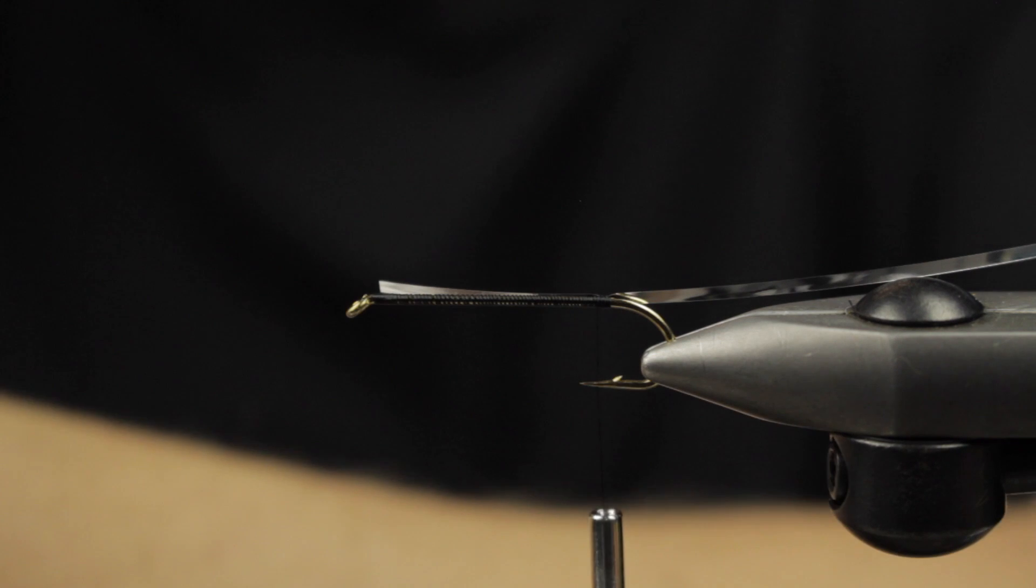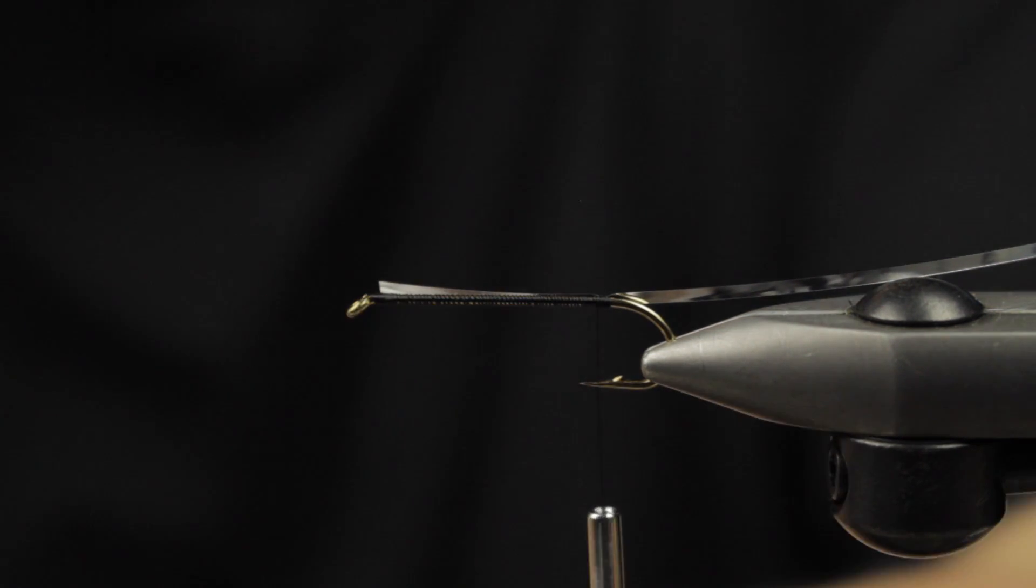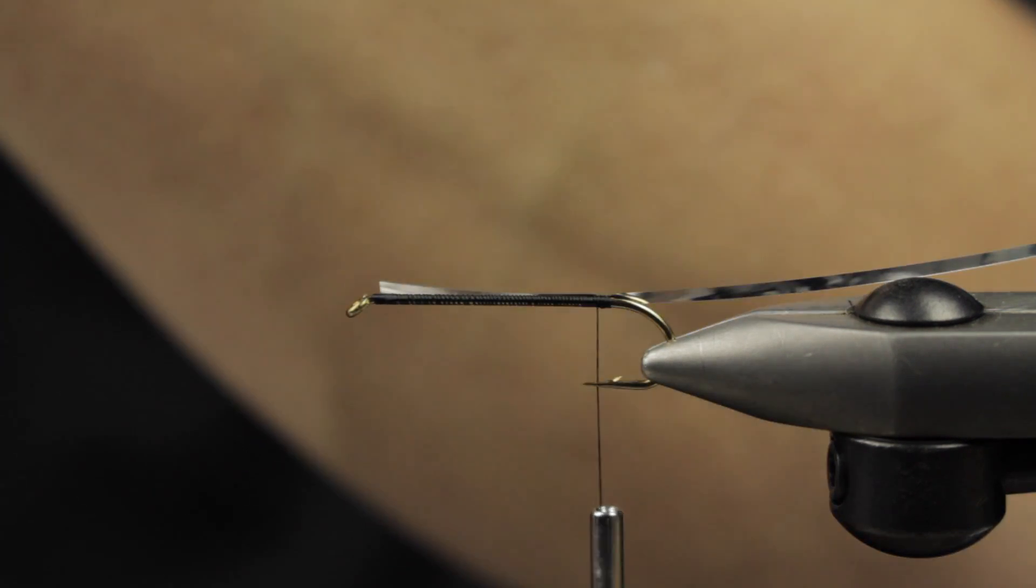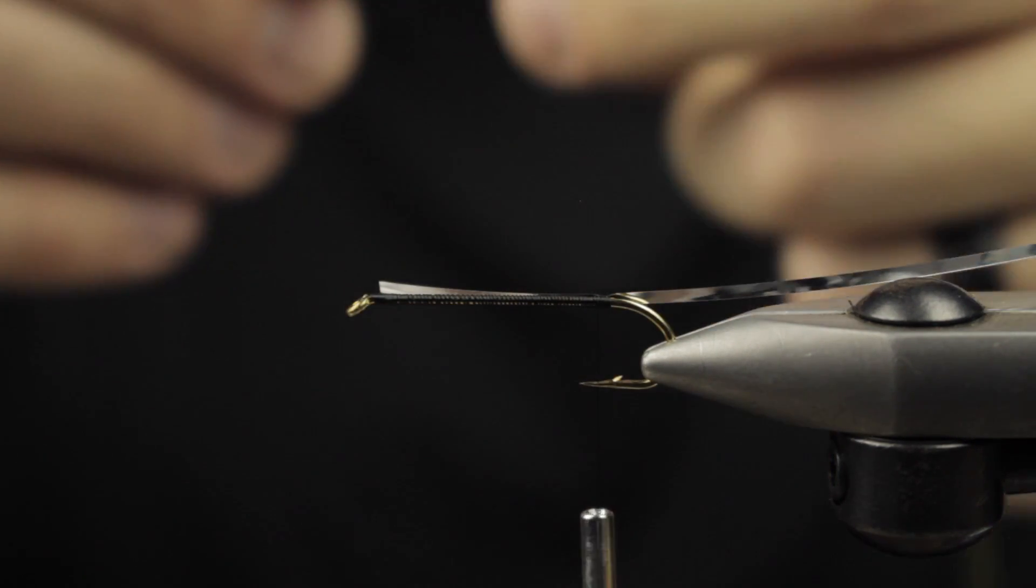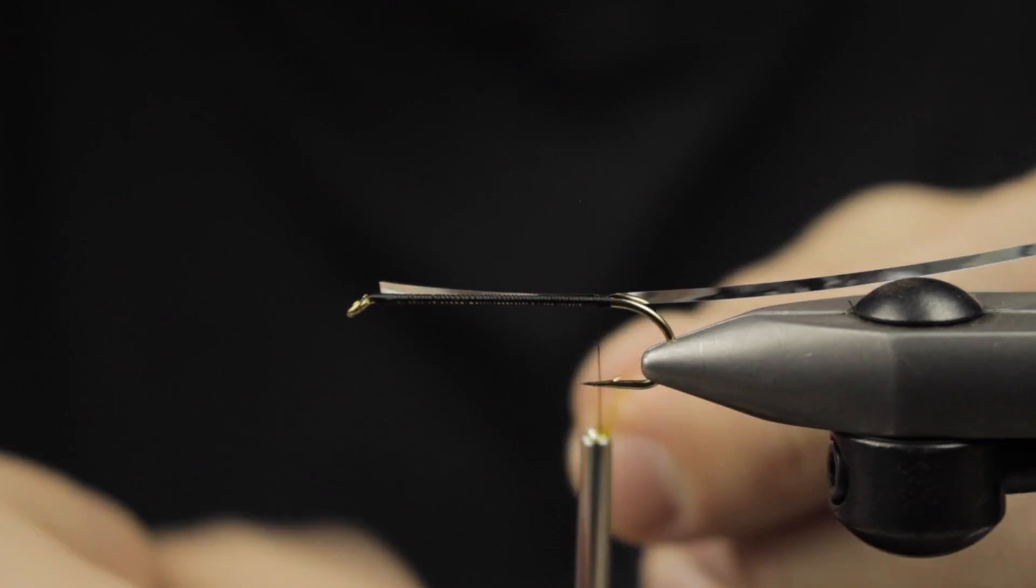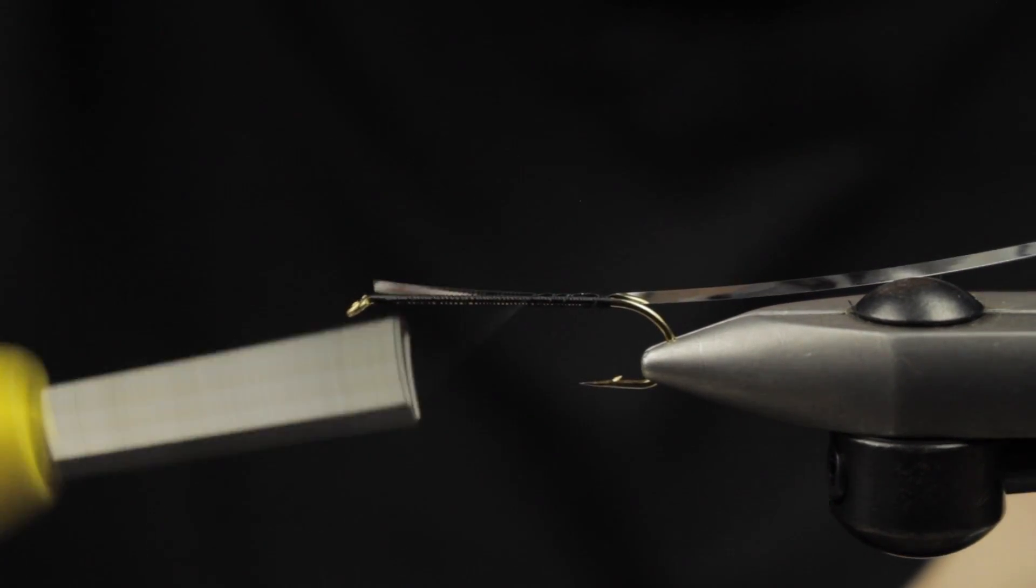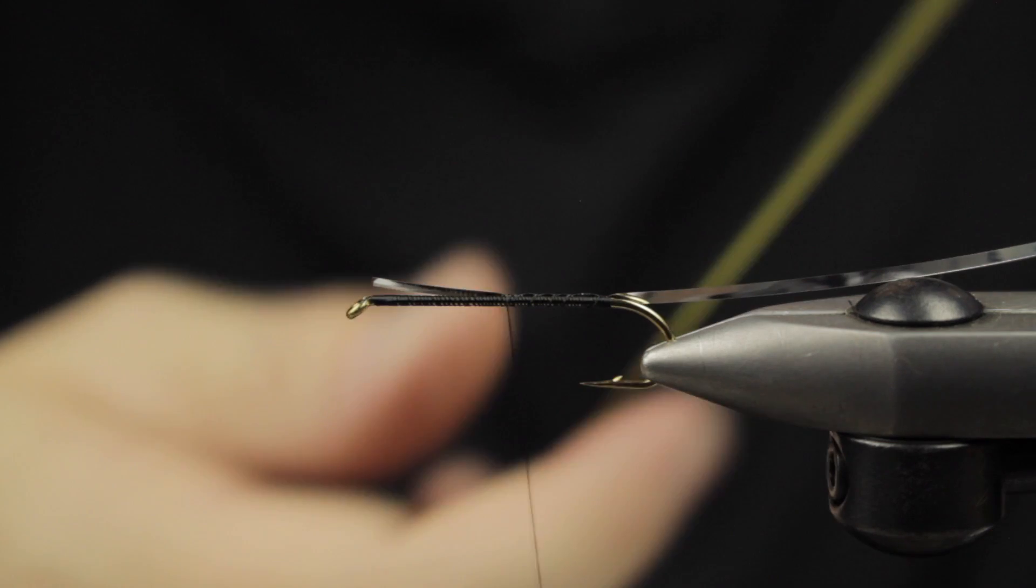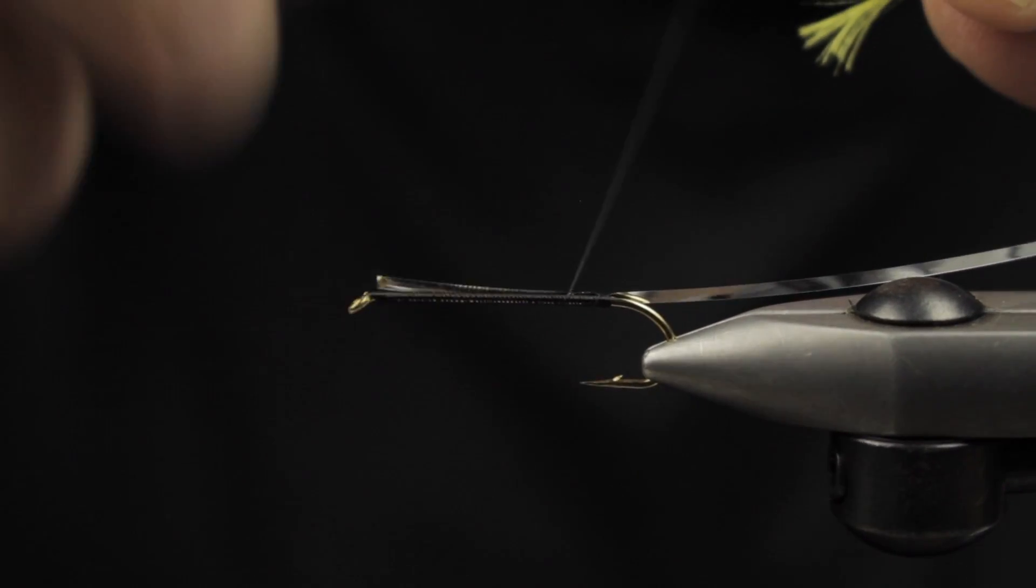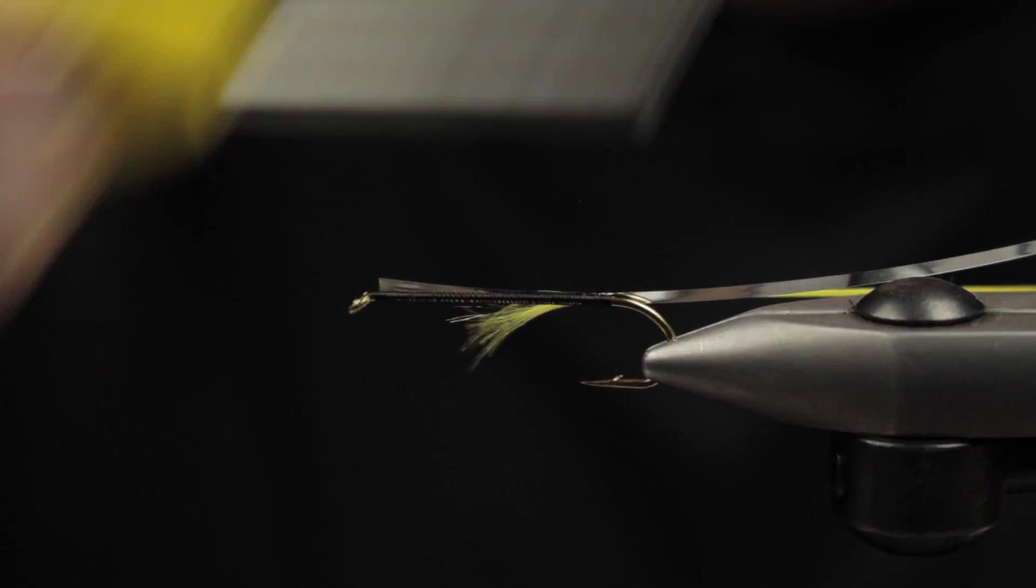Next up we're going to use some yellow floss. With floss bodies you want to keep the underbody as clean as possible. What I'm going to do is wrap a little bit forward and tag this floss in. You can see I leave a little bit extra and I'm really pushing to have those turns be nice and tight all the way down.